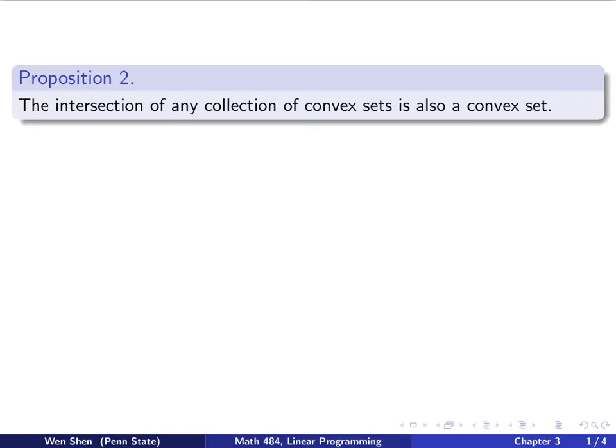It says that the intersection of any collection of convex sets is also a convex set. Let's take a look at how to prove this.